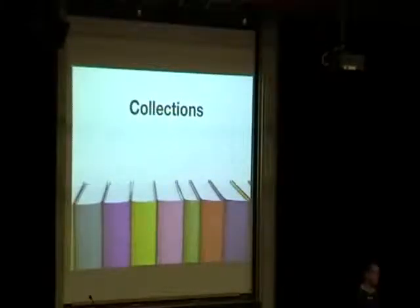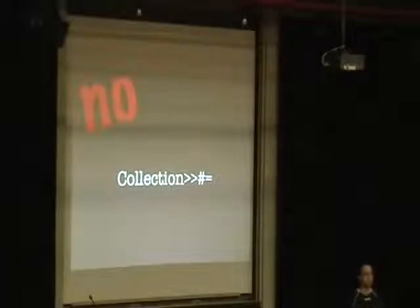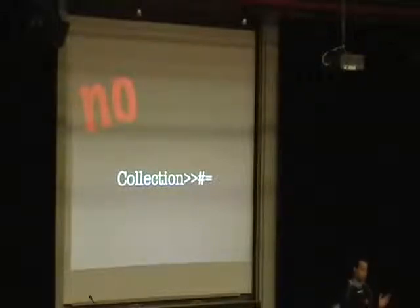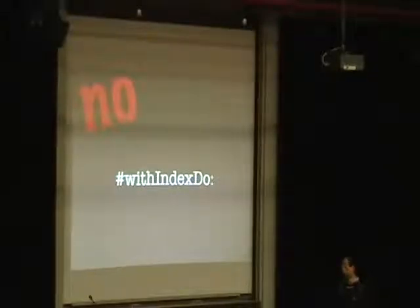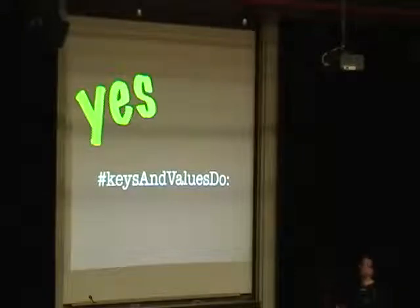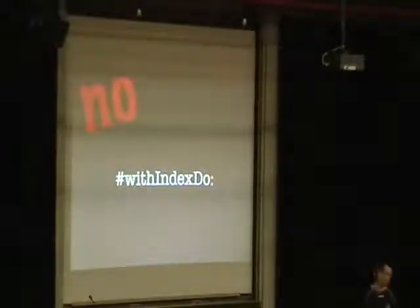Then there is of course the huge library of code — so what do we do there? First let's talk about collections. One dangerous thing is to try to compare collections, because the equals method is essentially implemented very differently in all Smalltalk dialects, if it's implemented at all. So if we want to compare collections, we just have to do it manually in our code. There is also something very specific to Squeak and sort of useless anyway, because you can just write keysAndValuesDo on a collection instead of withIndexDo.